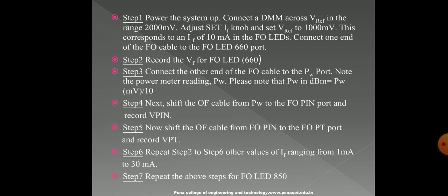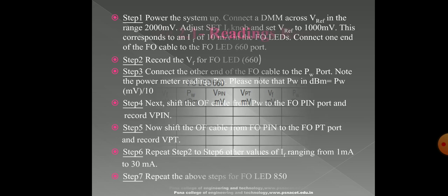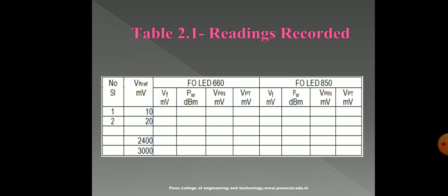Step 6: Repeat Steps 2 to 5 for other values of IF ranging from 1mA to 30mA. Step 7: Repeat the above steps for FOLED 850. In Table 2.1, we record all important parameters — VF, PW, V_PIN, and V_PT — for both FOLED 660 and FOLED 850. IF readings should cover the full range of the FO LEDs. Note that PW increases by 3dB when IF is doubled in the linear range, and PW increases by 10dB when IF increases by 10 times.